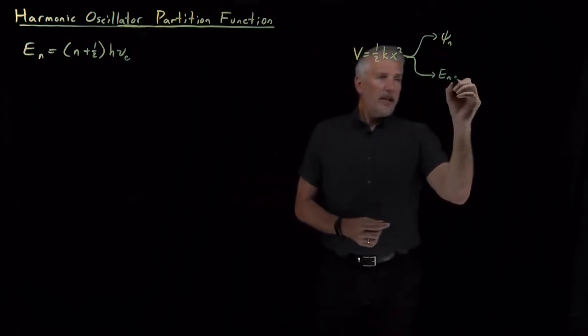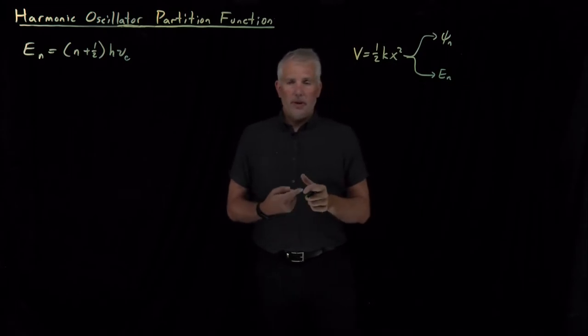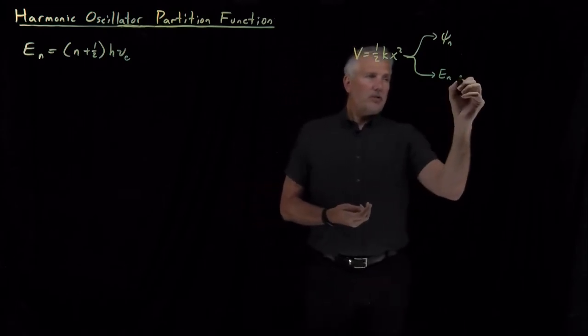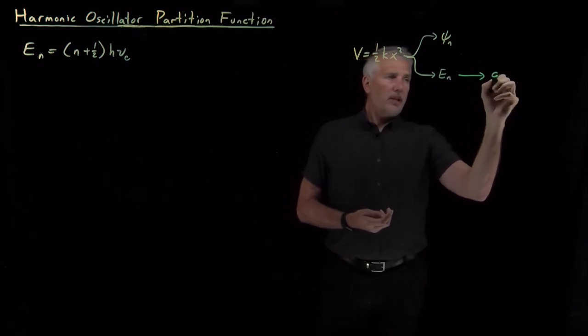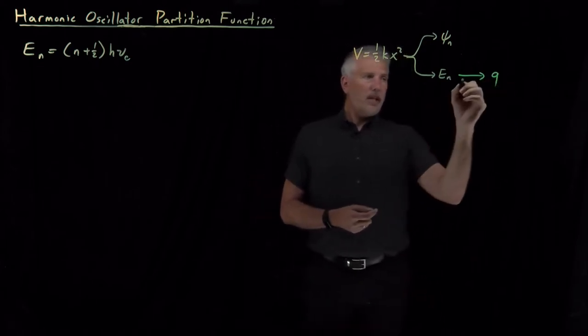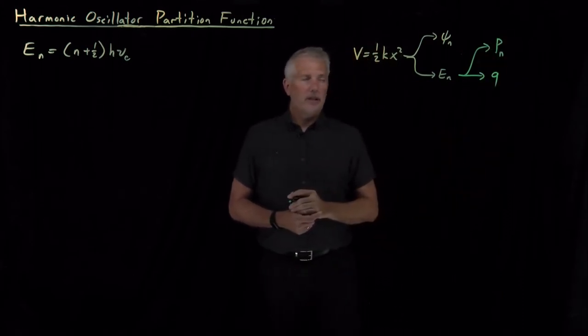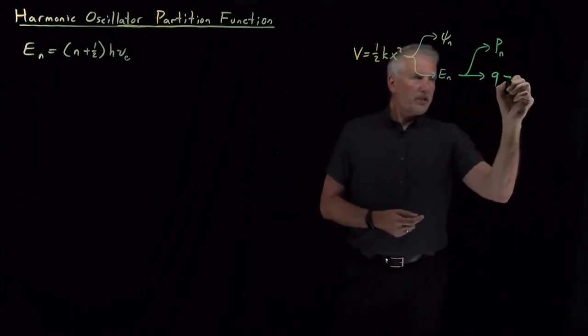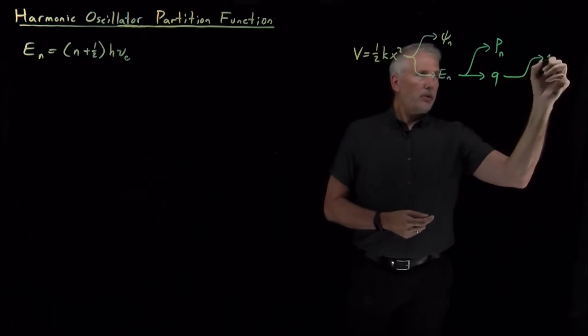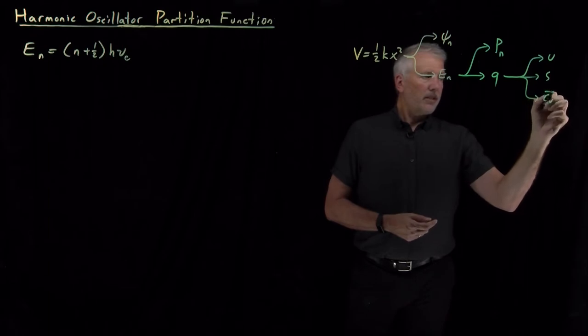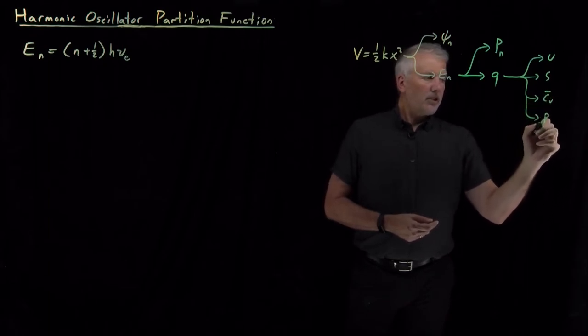And then, as we've done before for both the particle in a box and for the rigid rotor, now that we know those energies, we can use those to obtain the partition function and also the probability of occupying any particular energy level. And once we have the partition function, then we'll be able to do a lot of things like calculating energies and entropies and heat capacities and pressures and so on.